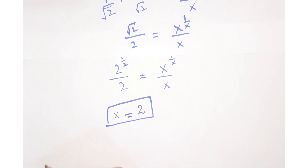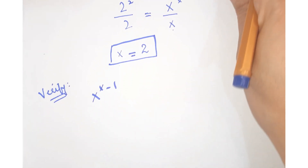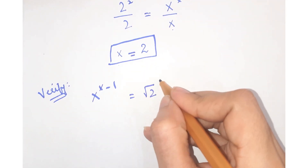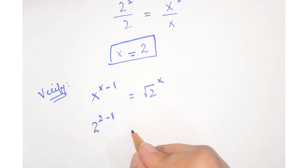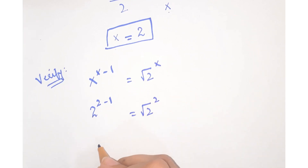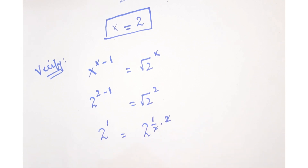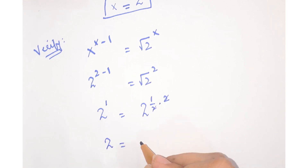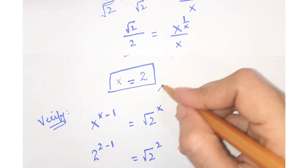Now let's verify whether our solution is correct. The question is x to the power x minus 1 is equal to under root 2 to the power x. Putting the value x equals 2: 2 to the power 2 minus 1 equals under root 2 to the power 2. Here this is 2 to the power 1, and this is 2 to the power half into 2. This and this gets cancelled, so we can say that 2 is equal to 2. So it is verified that x has a value of 2.